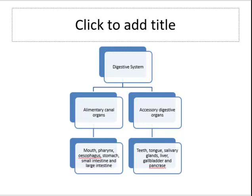The accessory digestive organs contribute to the process of digestion and absorption, but no food or food waste actually passes through them. They include the teeth, tongue, salivary glands, liver, gallbladder, and pancreas.